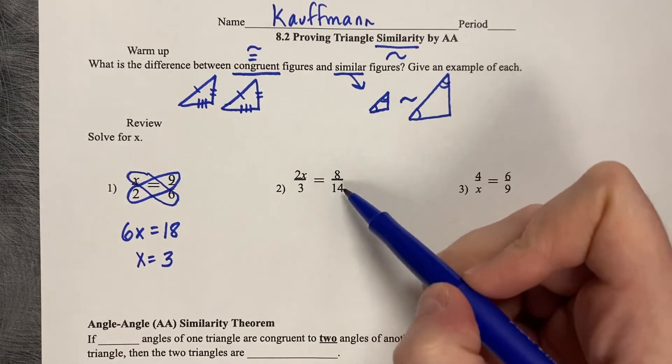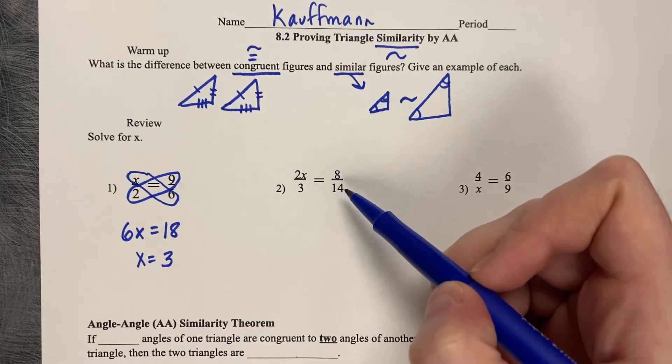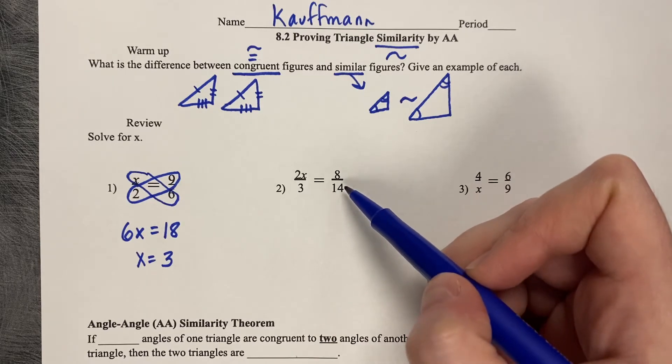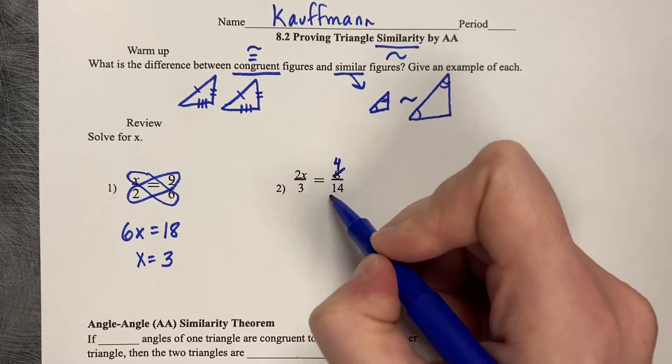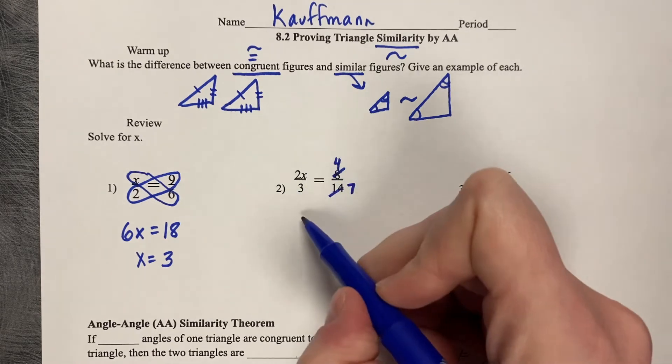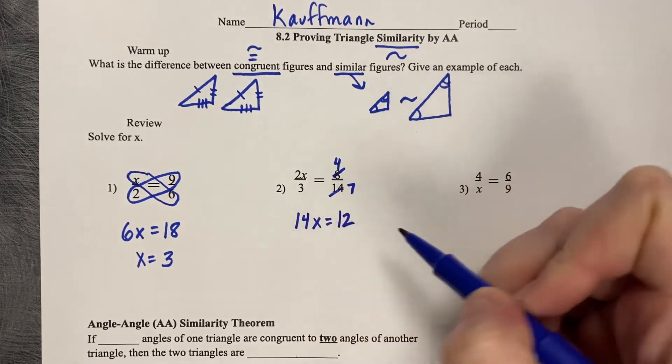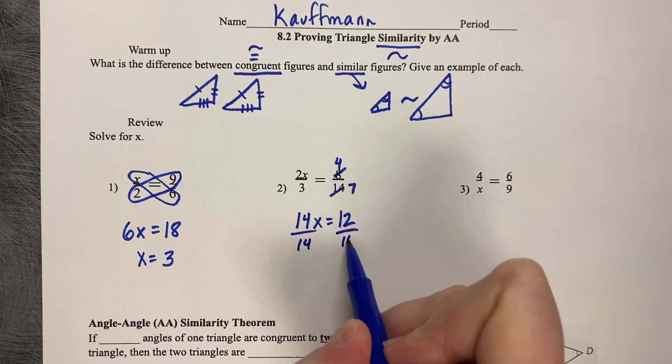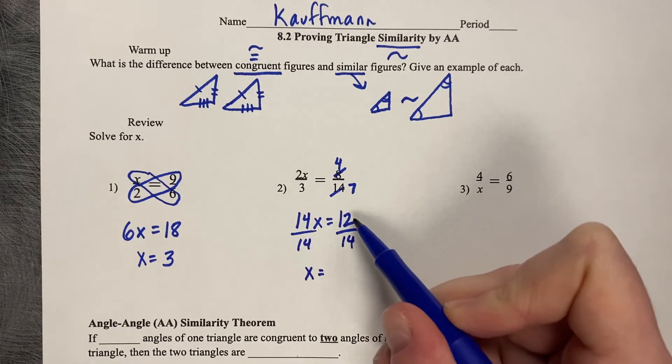Same thing here, but just so that you know, you can reduce fractions before you solve the equation. So if you notice 8 over 14, both of those divide by 2, so you could do 4 over 7 instead. And it makes your math slightly easier. So 2x times 7 is 14x, 4 times 3 is 12, cross multiplying. And then divide by 14, and that's not a nice number, so we'll just reduce that. 6 over 7.